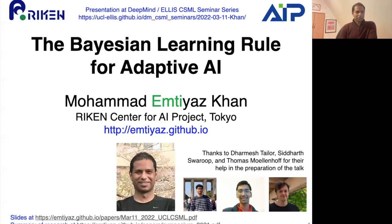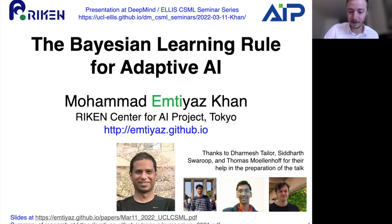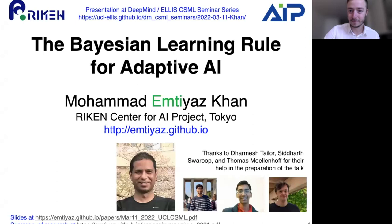All right. Hi, everyone. Thank you for coming. Today we have MTS Kan from the RIKEN Center, who is a team leader for the Approximate Bayesian Inference Team at RIKEN. Today he'll talk about the Bayesian Learning Rule for Adaptive AI. And if you have any questions, feel free to unmute yourself and ask during the talk. Flo, it's all yours.